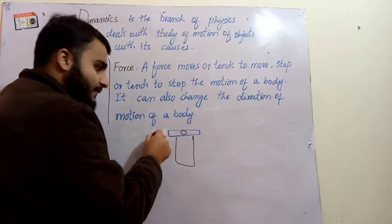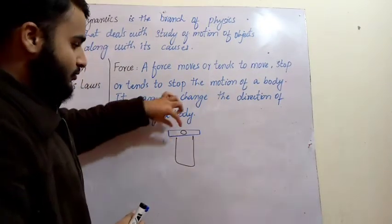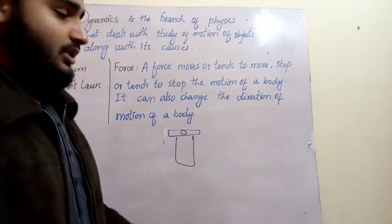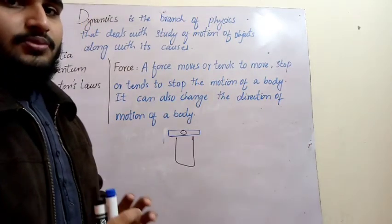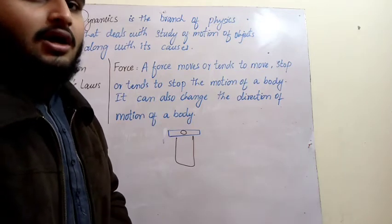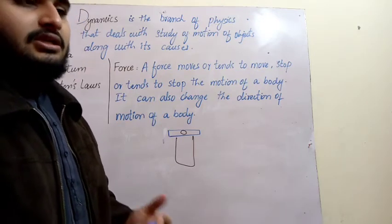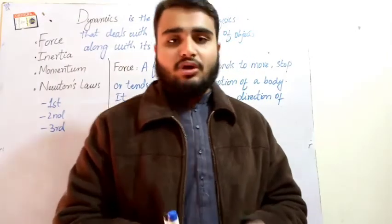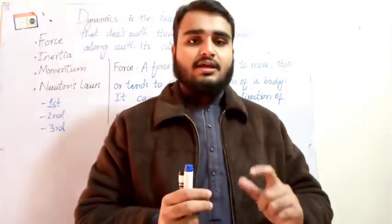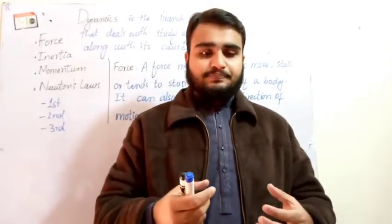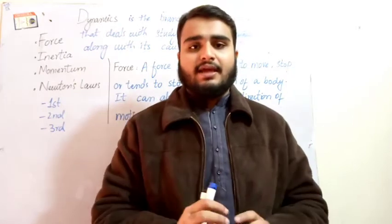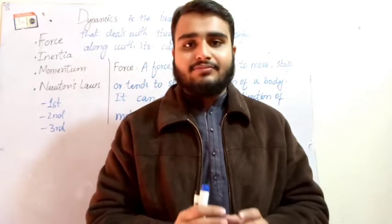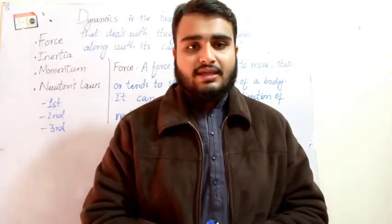When we flick the cardboard, the card moves away. The coin resists the change in its position — it stays where it was. This is because the coin resists any change in its state. If the position is changing, it will resist. It will resist because of inertia. So basically, inertia is a property of a body by which it resists any change in its state. The coin was a body, and it resisted the change — it remained in its original position. We give this the name inertia.